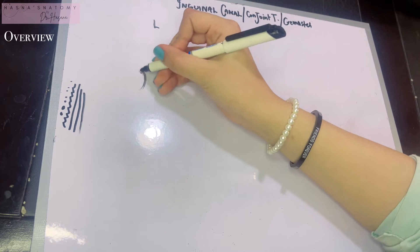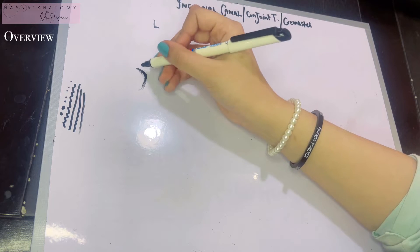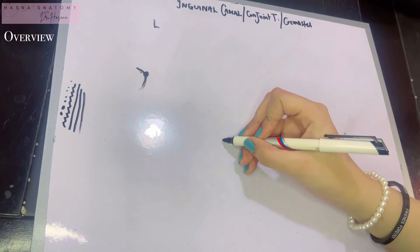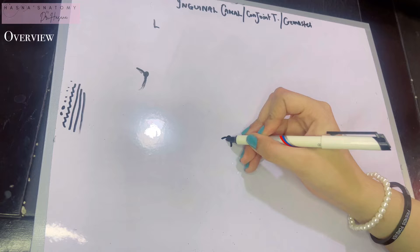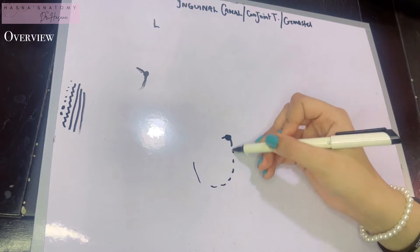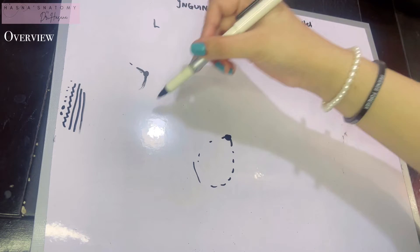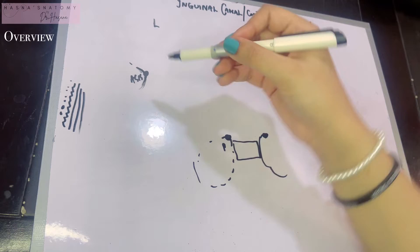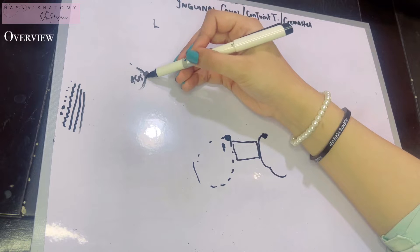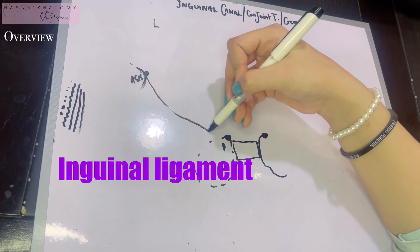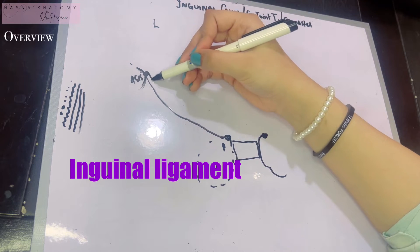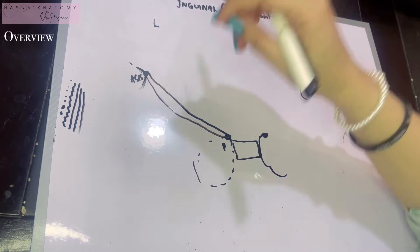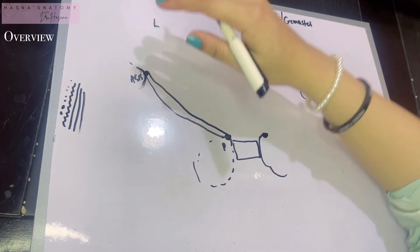Remember that the hip bone has an anterior superior iliac spine — the most anterior part of the iliac crest — and there is a pubic tubercle. One is your pubic bone and that is your ilium bone. From the anterior superior iliac spine to the pubic tubercle runs an important structure known as the inguinal ligament, with a medial part and a lateral part.